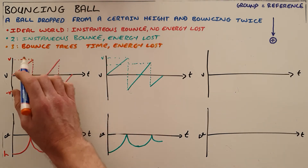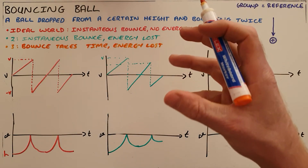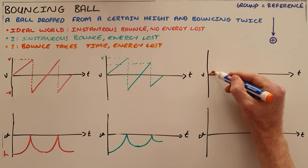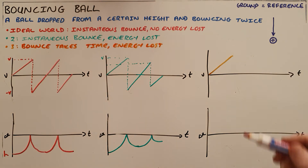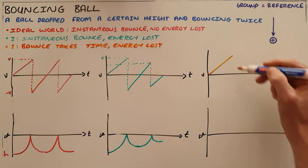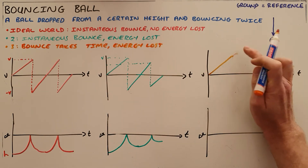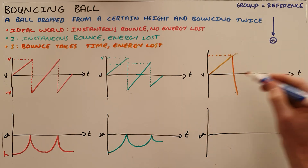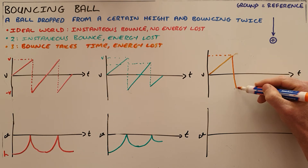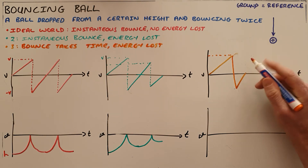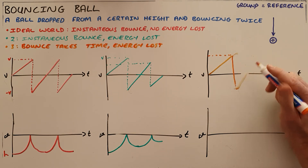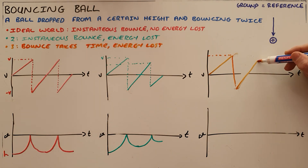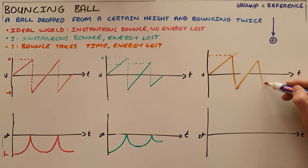Our final example is one where the bounce now takes a certain amount of time — it takes time for the ball to change its momentum as it strikes the ground and then accelerate upward again. The velocity increases at that constant acceleration of 9.8 meters per second squared, but the difference is there is no longer a dotted line showing an instantaneous change in velocity. Instead, a very sharp line shows that the velocity changes direction. Energy is lost, so it does not leave at the same velocity it arrived with — it leaves at a lower velocity before accelerating upward once again, not reaching the original velocity because energy has been lost.